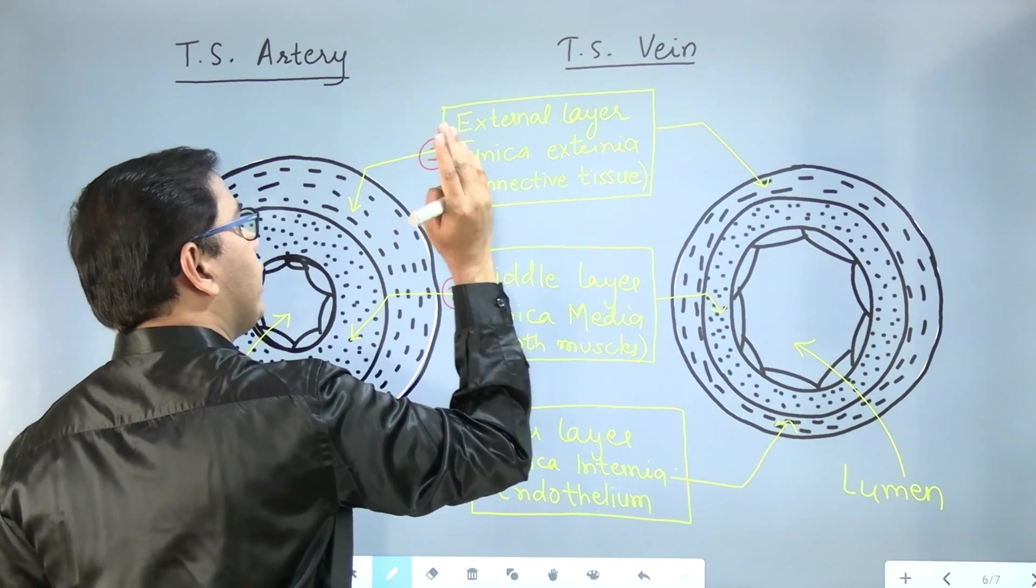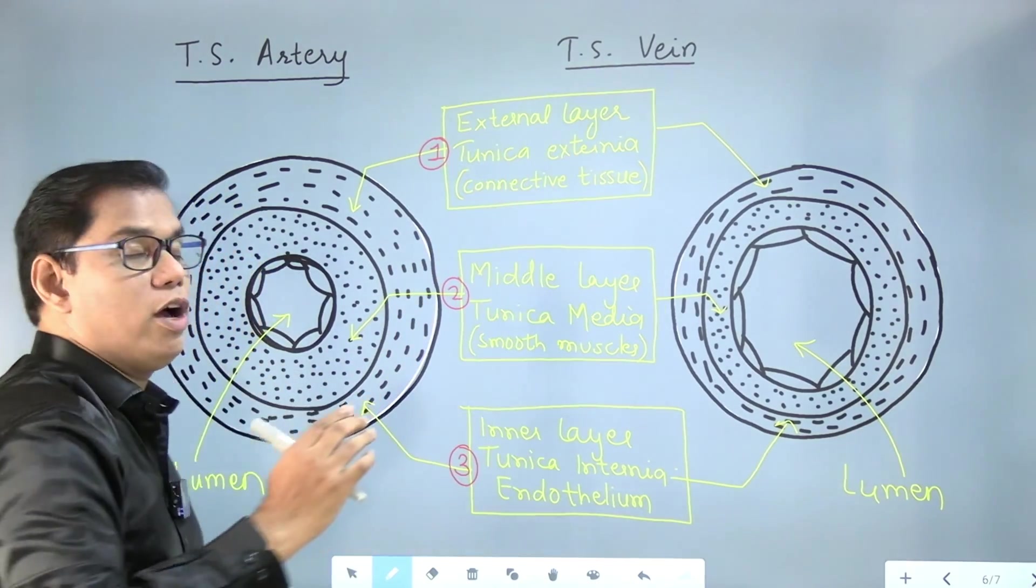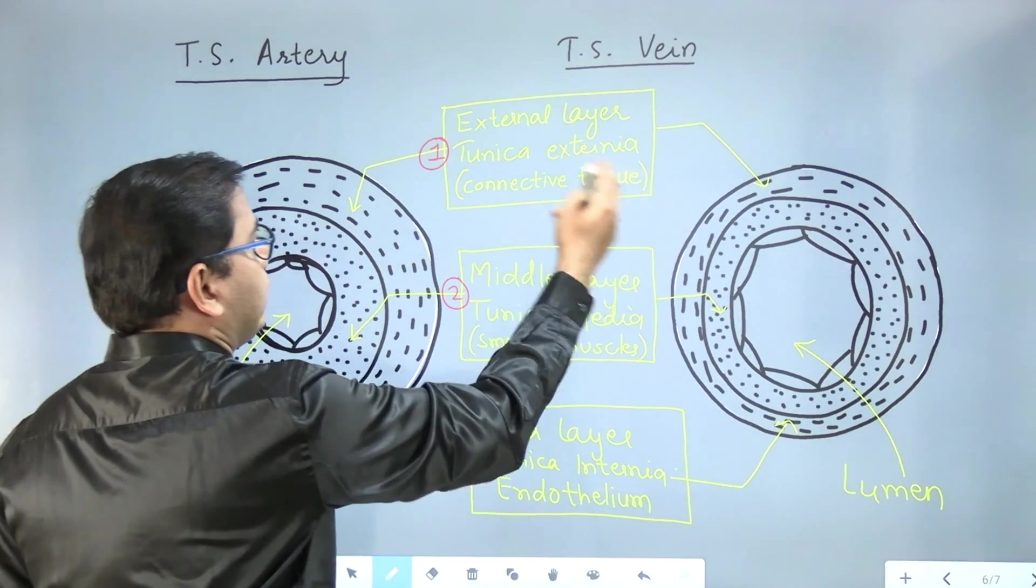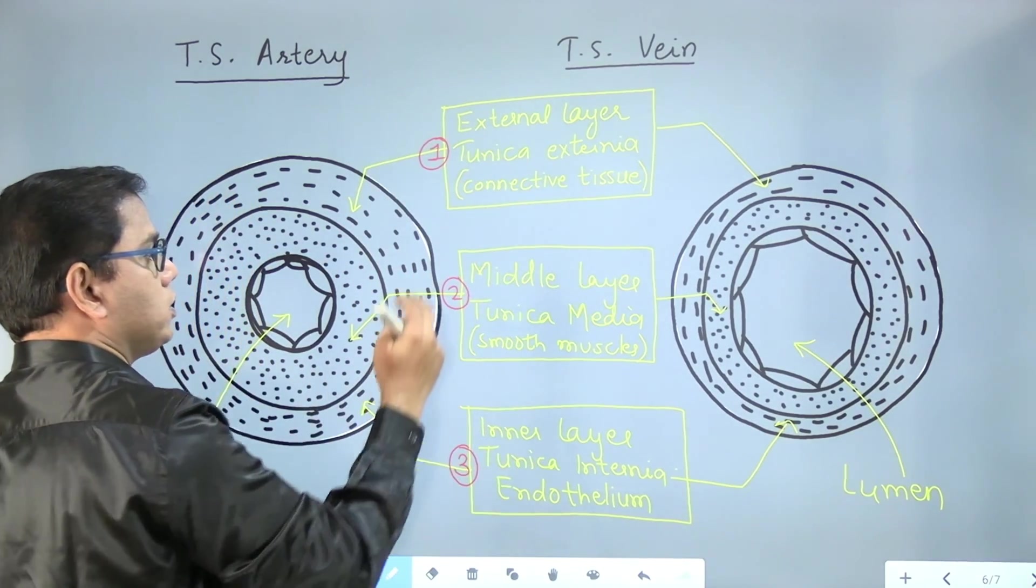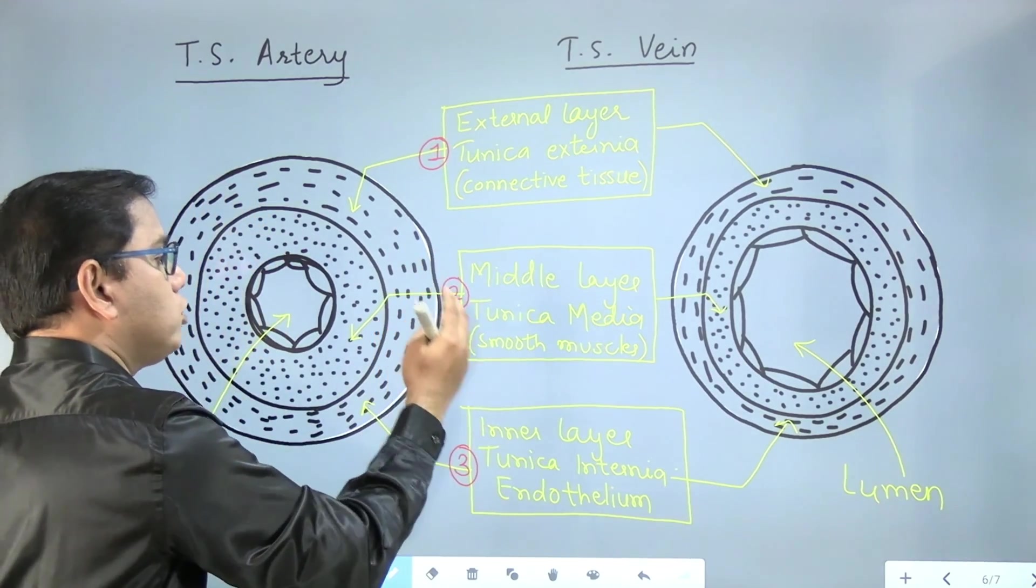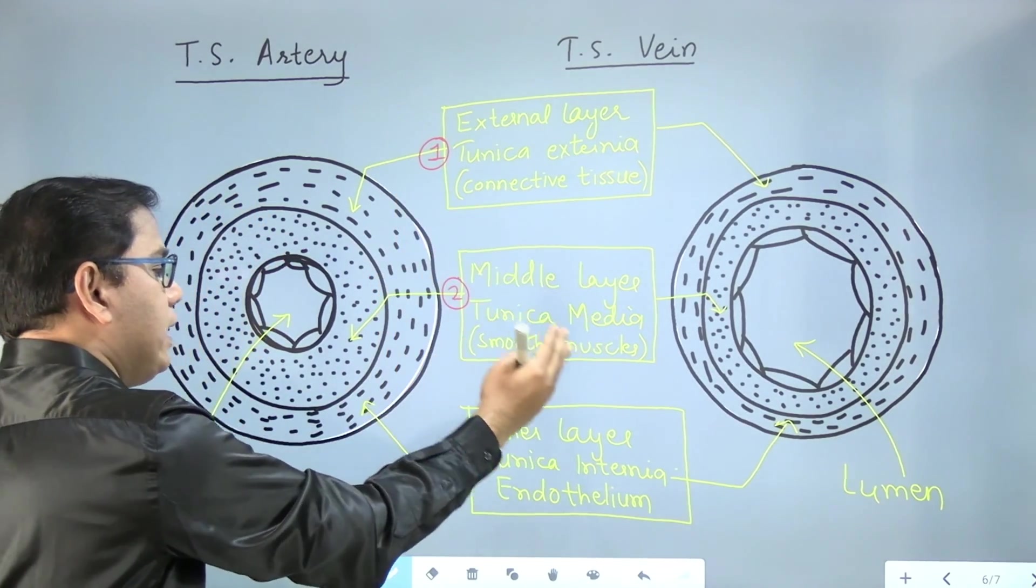External layer, also called tunica externa, is made up of connective tissues. Yes, we have to tell that it is made up of connective tissues. Then middle layer, also called tunica media, made up of smooth muscles. And inner layer.